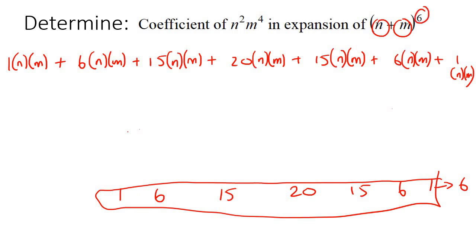Now they're looking for n²m⁴. Where's n²m⁴? Here it is, and they want to know the number in front. There it is, it's the number 15.